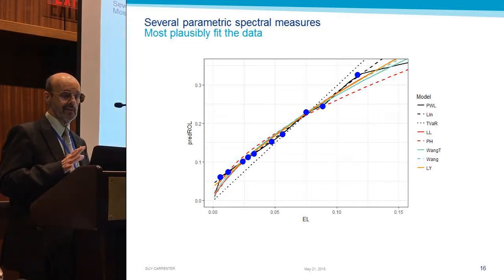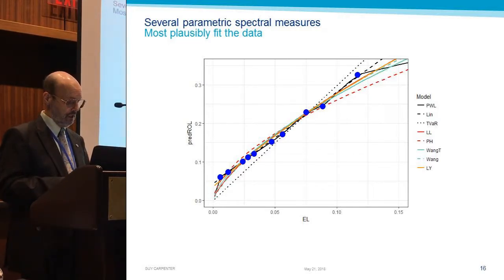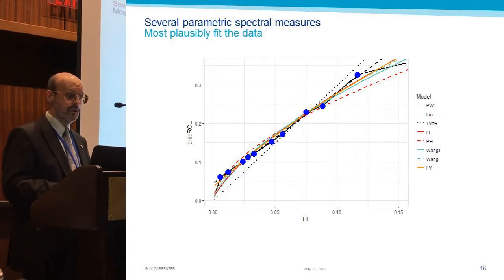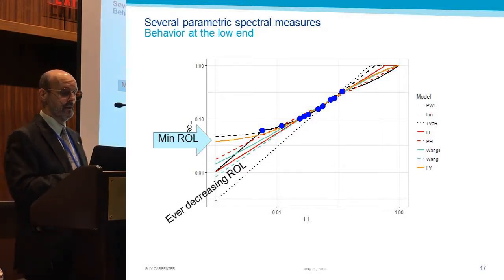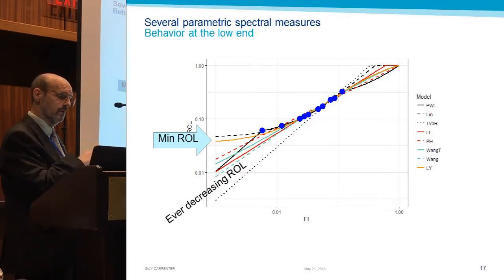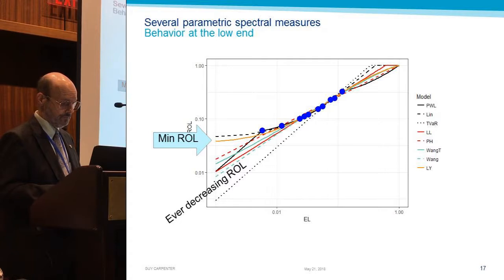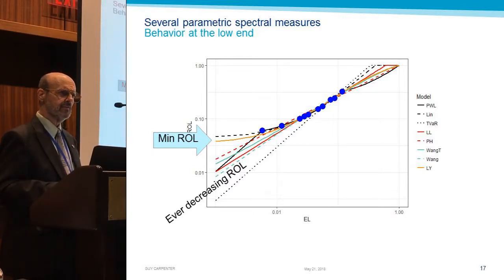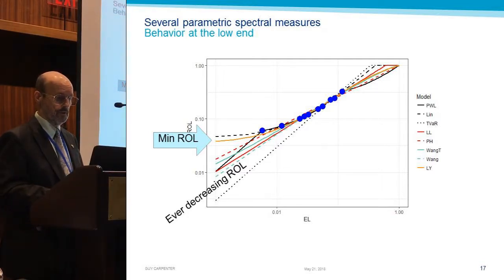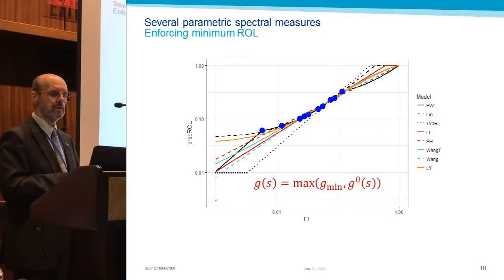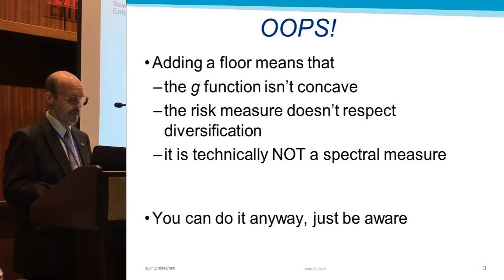Notice this only goes up to about 12% or so, and they're doing a pretty good job of fitting here. Let's take a look at the low end — we'll shift to a log-log scale to get a better look at what's happening there. Most of these are showing ever-decreasing rate on line, all going to zero at some rate or another. But two of them seem to be going down to a minimum rate on line, which is a feature we like. We might want our distortion functions to exhibit a minimum rate on line, because that seems to be what happens in the marketplace. That doesn't immediately discard the others from consideration, because you can fix them — you can put a floor on them. Any of them you want can exhibit a minimum rate on line.